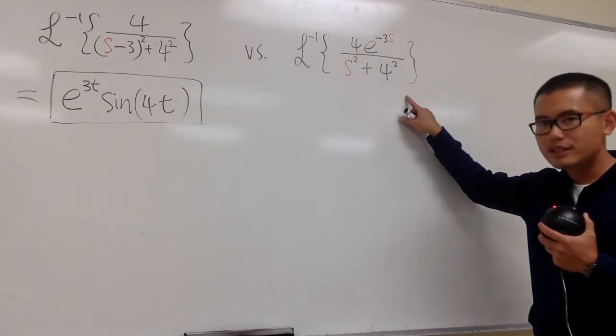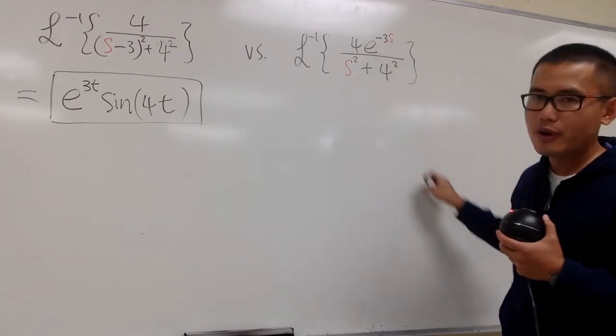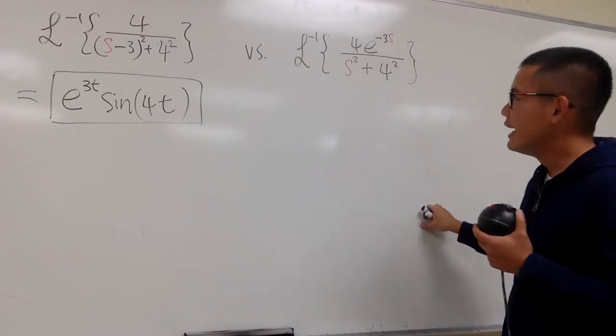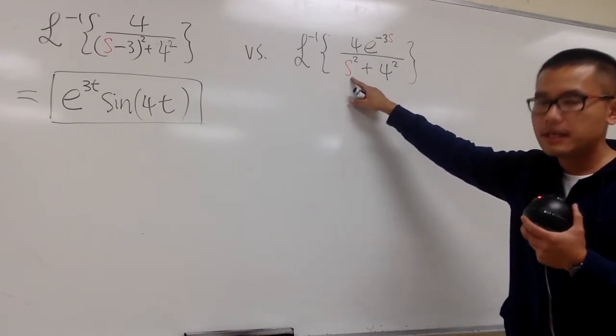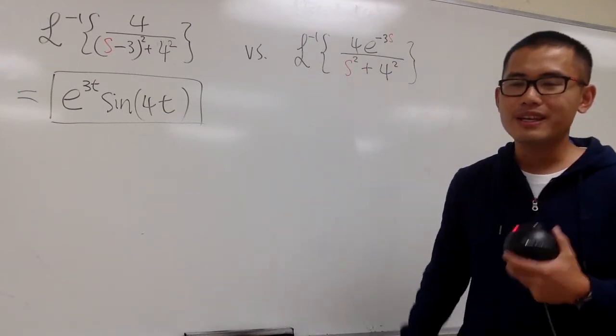And now, if you look at this one, we have e to the negative 3s right here. We have the e to the something already in this s world, right? And we are not subtracting, nor adding anything directly to s. This is an example of the translation in the t world, and this is how you can do it.